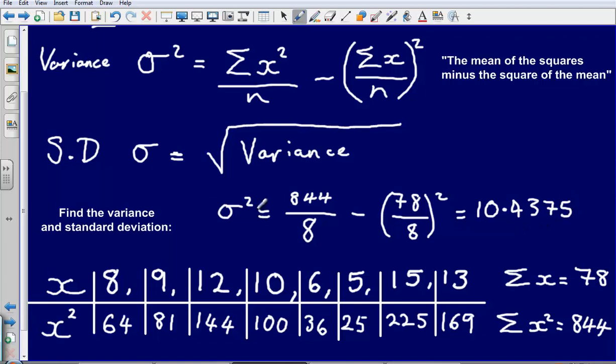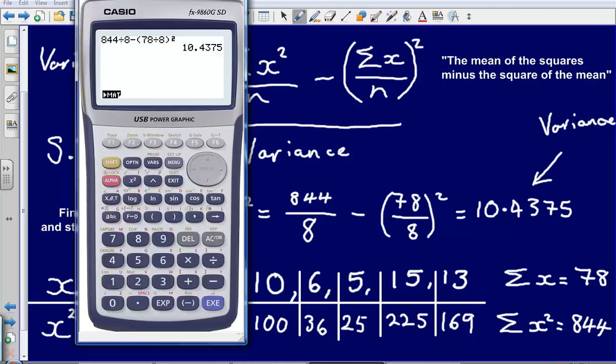So that is our variance calculated. We've just calculated our variance here. We now need to calculate our standard deviation. Our standard deviation is simply the square root of the variance. And so let's do that. So square root of our answer here.